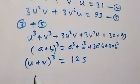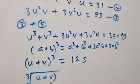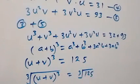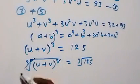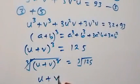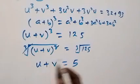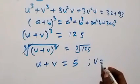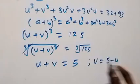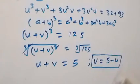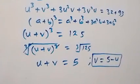Taking the cube root on both sides, the cube root of u plus v all cubed equals the cube root of 125. The cube roots cancel and we get u plus v equals 5. Making v the subject by taking u to the other side gives us v equals 5 minus u.